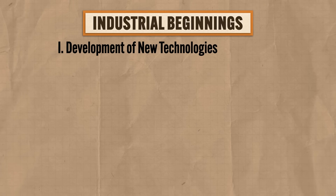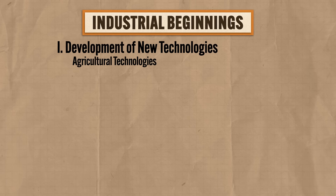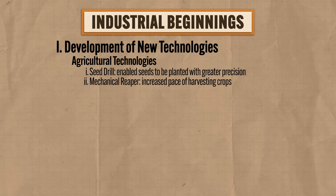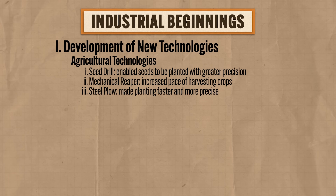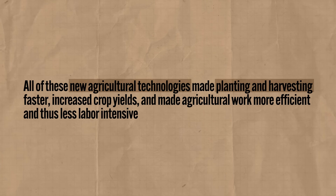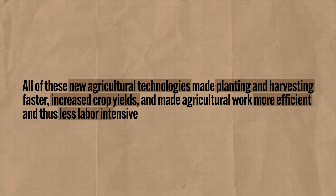There are two reasons the Industrial Revolution began when and where it did. The first reason is the proliferation of new technologies — specifically two categories. First, there were new agricultural technologies. New tools like the seed drill enabled seeds to be planted with greater precision. The mechanical reaper greatly increased the pace of harvesting crops. And later, the steel plow made planting far more precise and way faster. All of these new agricultural technologies made planting, harvesting, and all other agricultural work more efficient and thus less labor-intensive.